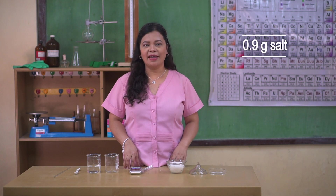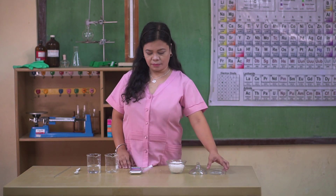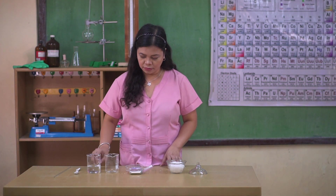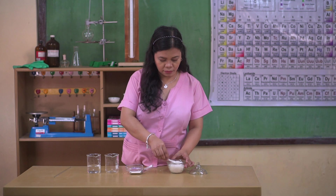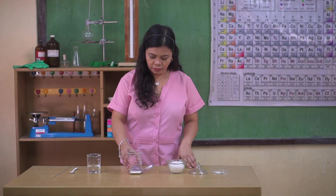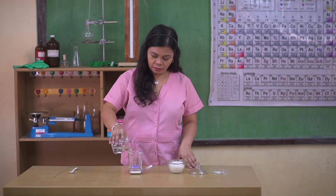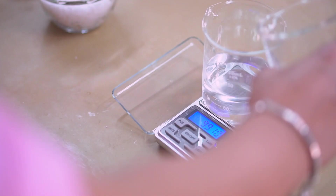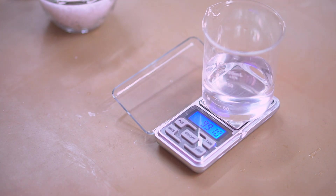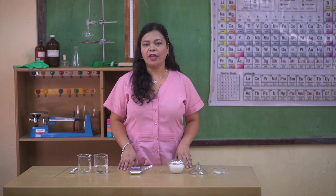In preparing 0.9% normal saline solution, we will measure 0.9 grams of salt and 99.10 grams of water using the digital weighing scale. We then dissolve the measured salt in the water to make 100 ml of 0.9% normal saline solution.